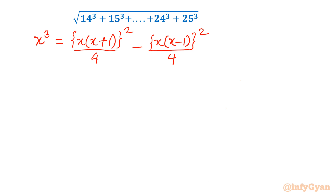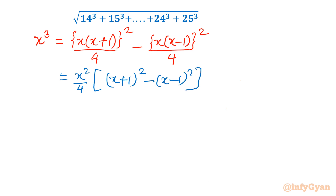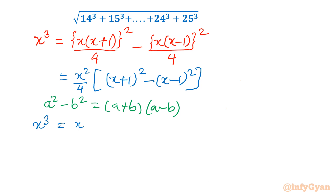Let us quickly prove where this identity actually comes from. Let me take x² common. So, I will take x² over 4. What would be left? That would be (x+1)² minus (x-1)². We know the a²-b² identity. So, a²-b² can be written as (a+b)(a-b). Our identity will become x³ equals x² over 4.